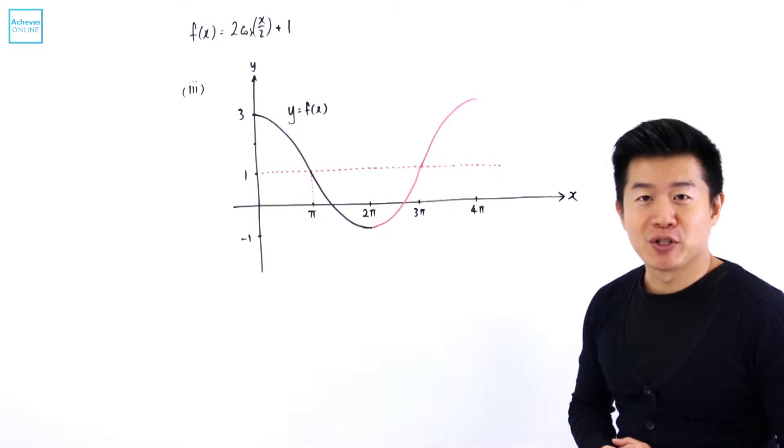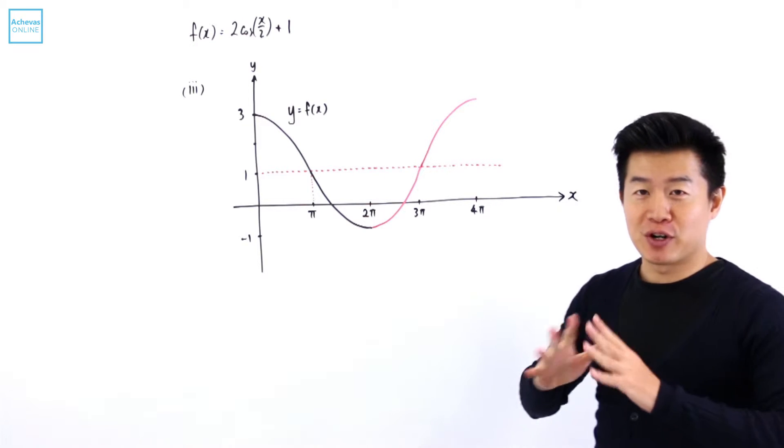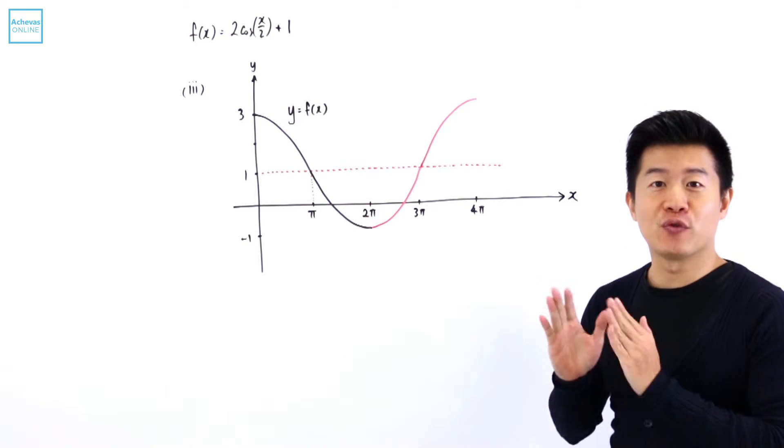We are supposed to sketch the graph of y equals f(x). What we can do is sketch the graph of f(x) for one full period first, and one period is, according to part 2, 4π.